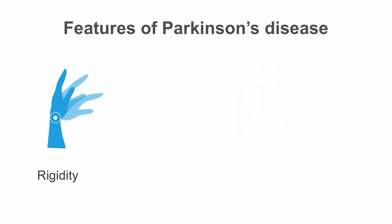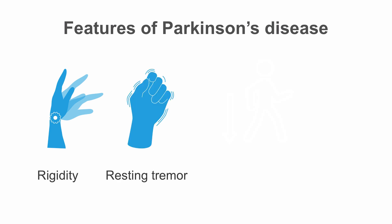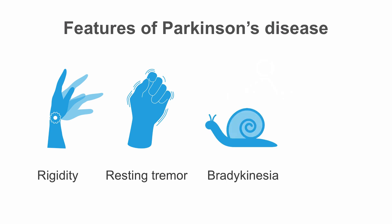Rigidity is present and has a characteristic called cogwheeling due to the ratchet-like action the tremor tendency imparts. The resting tremor has a pill-rolling characteristic, although many Parkinson's patients also have a postural tremor. Bradykinesia is a slowness or poverty of movement often best seen in the face.